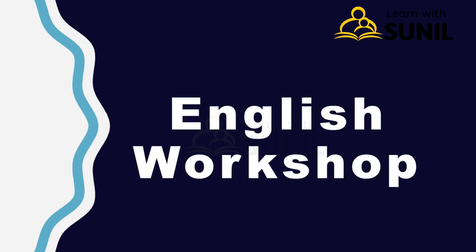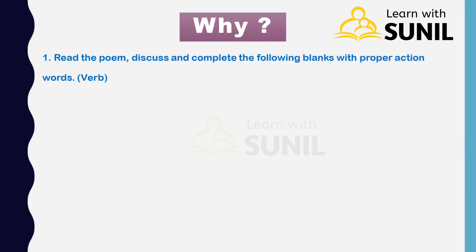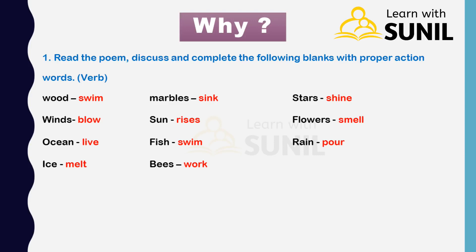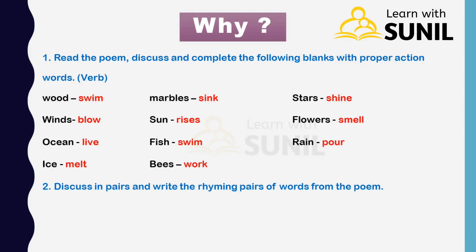English workshop. First question: read the poem, discuss, and complete the following blanks with proper action words. For wood — swim; marble — sink; stars — shine; winds — blow; sun — rises; flowers — smell; ocean — leaves; fish — swim; rain or ice — melt; beads — work. Second: discuss in pairs and write the rhyming pairs of words from the poem 'Why.'